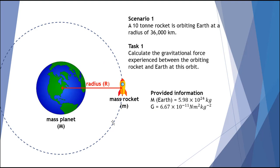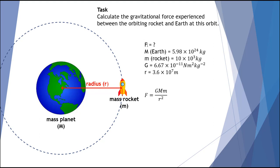Let's look at our first scenario. We have a 10-ton rocket orbiting the Earth at a radius of 36,000 kilometres, and our first task is to calculate the gravitational force experienced between the orbiting rocket and the Earth — with no thrusters or boosters running, simply in orbit under gravitational force in a circular path. The mass of the Earth is 5.98 × 10²⁴ kilograms, and the universal gravitation constant is also provided. Here's our information with F, the force between the two, as the unknown, along with our appropriate equation — Newton's law of gravitation. Have a go and see if you can solve it.